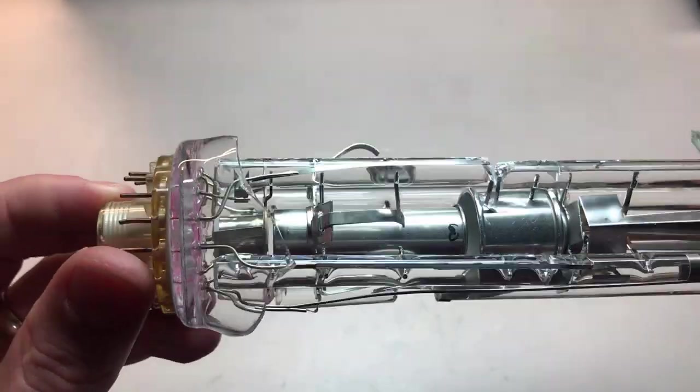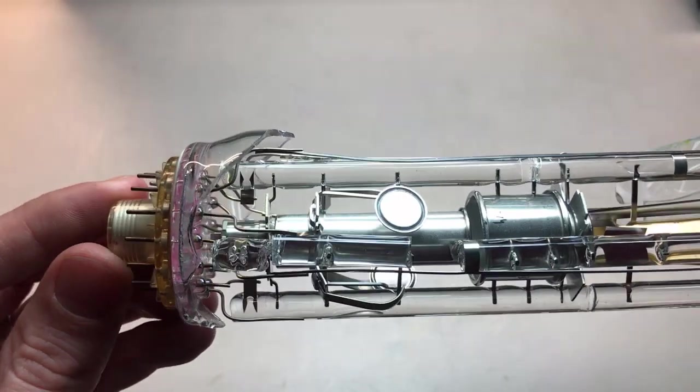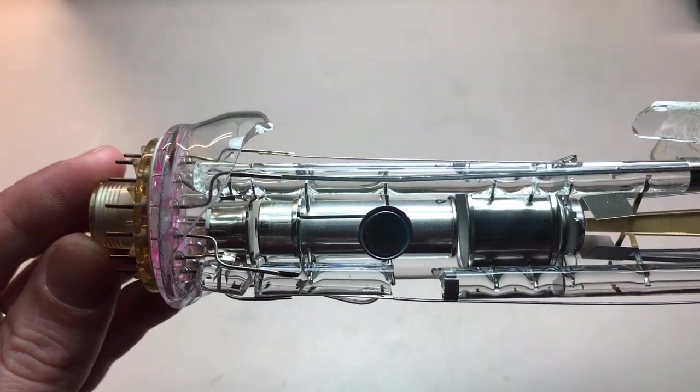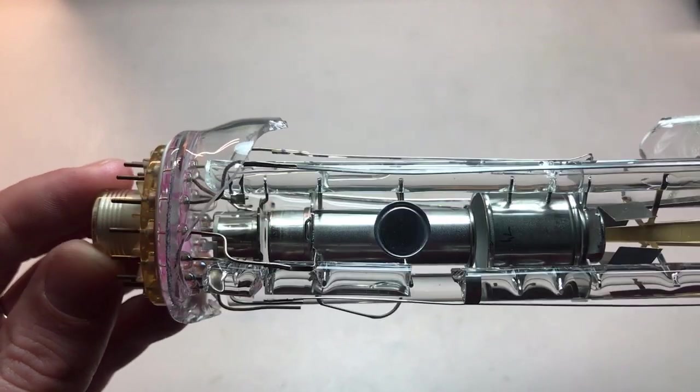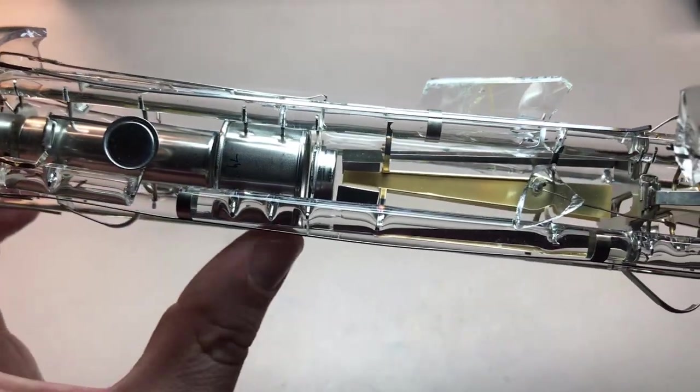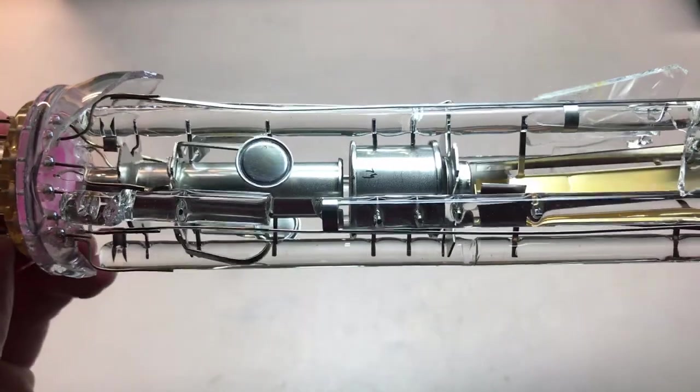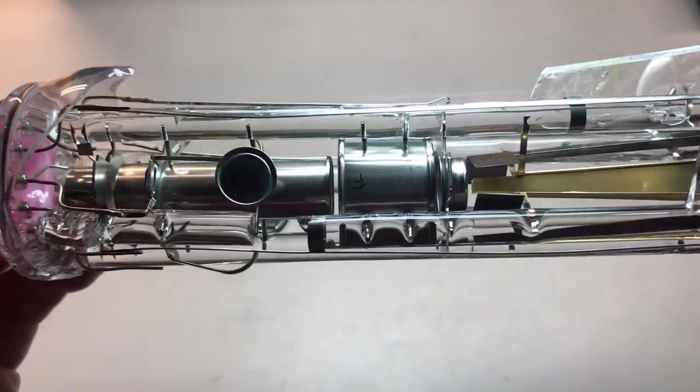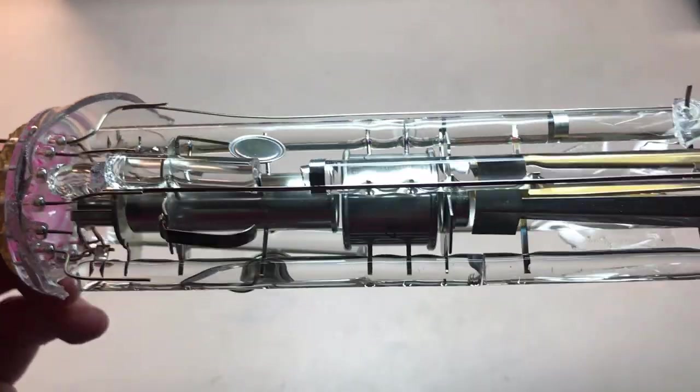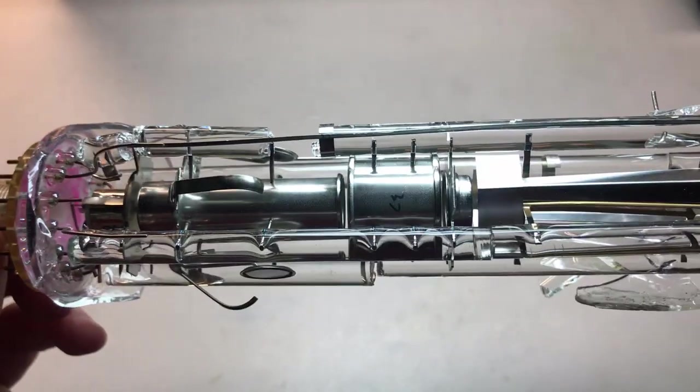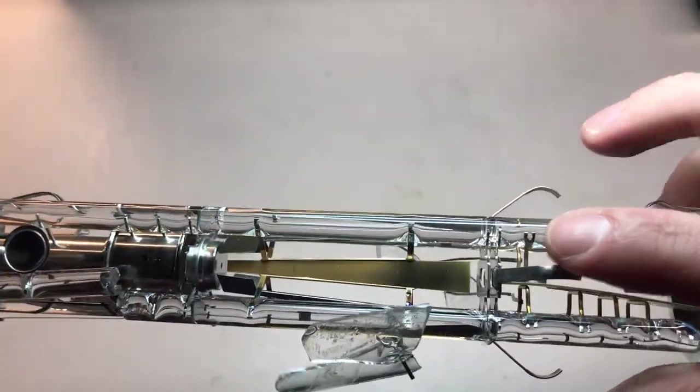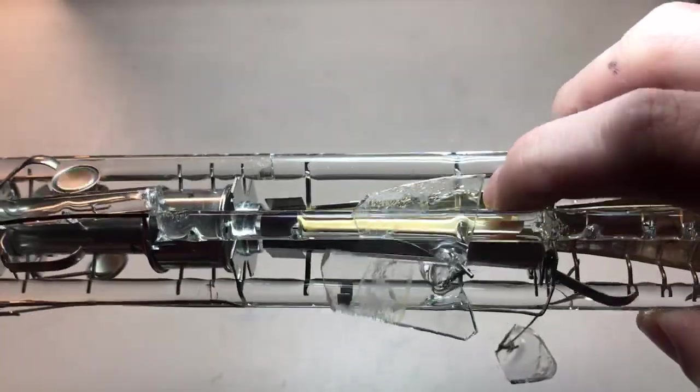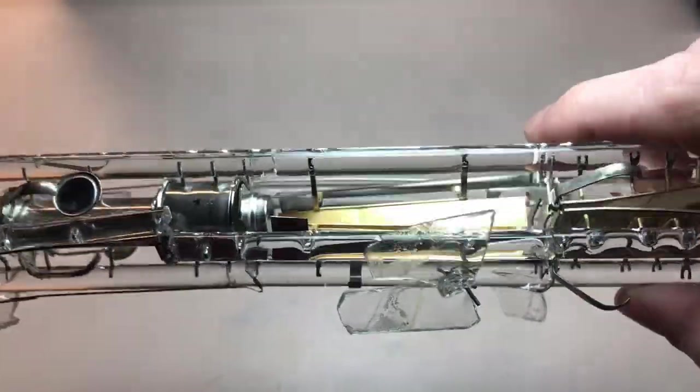And so a little bit on the CRT functionality. If we start on the left, this little cylinder there, that's going to be the cathode where the electrodes are generated. All of this here is going to be various focusing, so beam focusing and beam acceleration to focus and accelerate the electron beam down the electron gun.